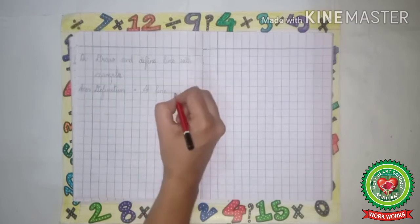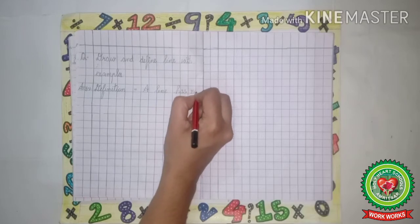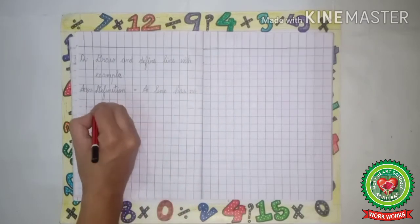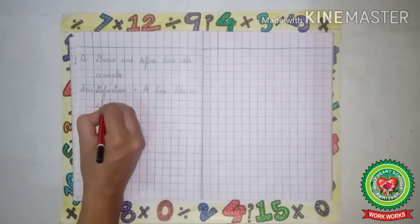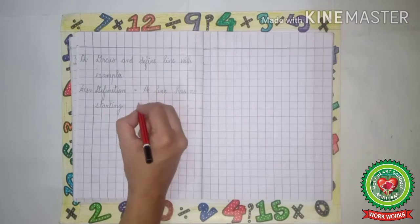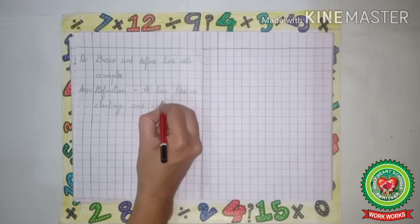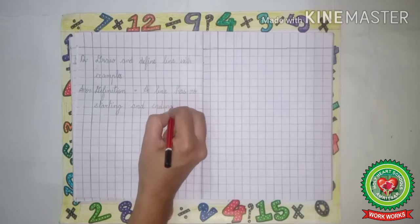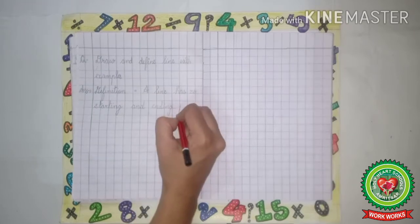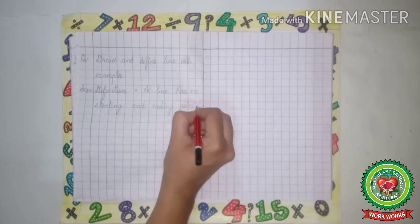A line has no starting, S-T-A-R-T-I-N-G starting, and, A-N-D and, ending, E-N-D-I-N-G ending, point, P-O-I-N-T point, full stop.